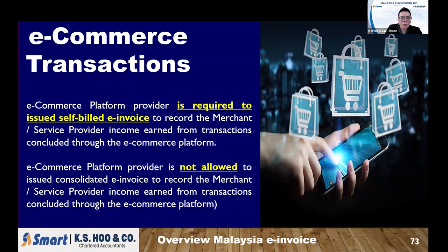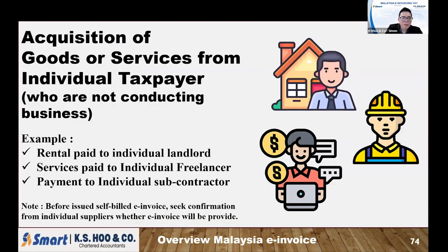So anyone doing online business needs to be careful. The income tax will be able to see how much sales are recorded from the online platform. The next category is acquisition of goods or services from individual taxpayers who do not conduct a business. Some businesses may pay fees to individual persons — such as rent paid to an individual landlord, services paid to an individual freelancer, or payment to an individual subcontractor. These individuals are not required to issue an e-invoice to you. So from your side, you need to do a self-billed e-invoice to yourself to justify these expenses.